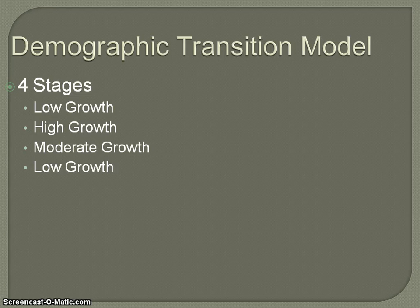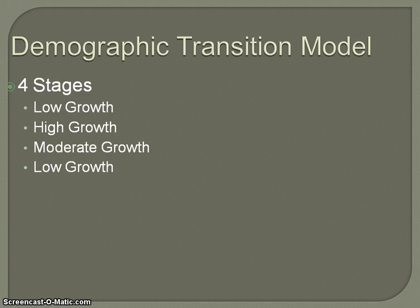Stage one and stage four both have low growth, but for very different reasons — we need to make sure we pay attention to that. Stage one represents the least developed of countries; stage four, the most developed. Some argue we may be moving into a fifth stage of the Demographic Transition Model. If you remember back to the population pyramids, we talked about countries like Japan who look like they might have shrinking populations, and that inverted pyramid could potentially throw us into a fifth stage.